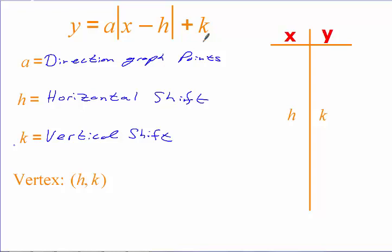H is the x-coordinate of the vertex and K is the y-coordinate. Your vertex is located at (H, K), and it always goes in the middle of your table. How many values do you think I want you to find? Usually five, but you can get away with three. It takes two points to make a line, and both sides of the absolute value function share the vertex. So use the vertex as one point, find one point to the left and one to the right to form the V shape.